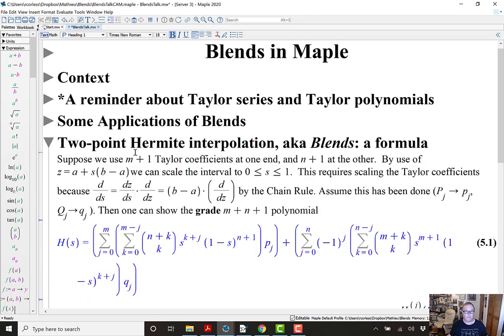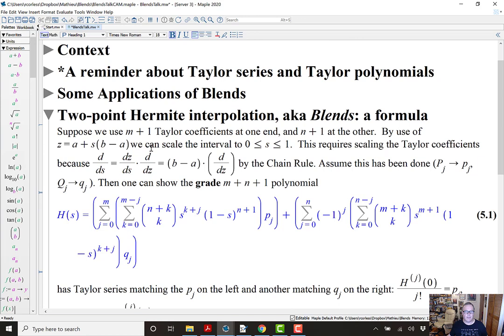All right, what is it really? Suppose we have m plus 1 Taylor coefficients at one end of the interval and n plus 1 Taylor coefficients at the other. By use of a linear transformation z equals a plus s times (b minus a), we can scale the interval to the unit interval, 0 ≤ s ≤ 1. This requires scaling the Taylor coefficients using the chain rule and we just assume that this has been done.